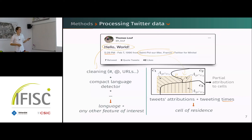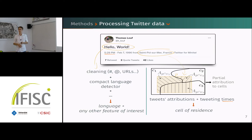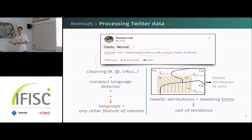A second piece of data we use every time is the geotag. These are mostly places — for instance, a city — and we define some kind of spatial grid with cells. To attribute geographically whatever we observed to these cells, we use partial attributions based on the ratio of intersected areas.